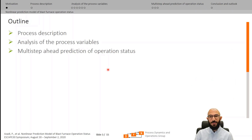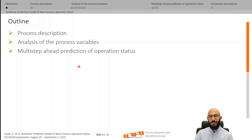I would like to first give you an overview about the process description, followed by the analysis of the process variables — basically what input and output variables are required for the establishment of the data-driven model and what the target ranges of validity of the output variables are for the reasonable operation status of a blast furnace. In the end, I will give further details about the methodology for multi-step ahead prediction of the operation status.